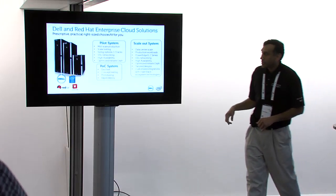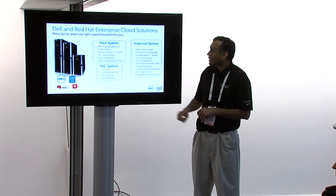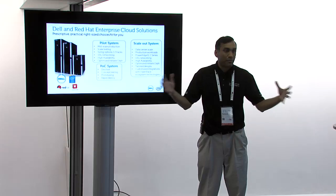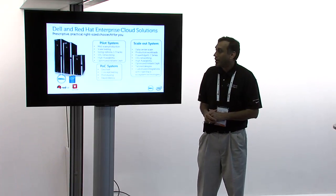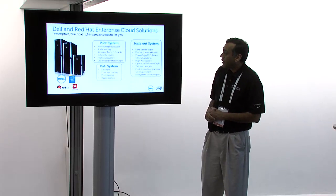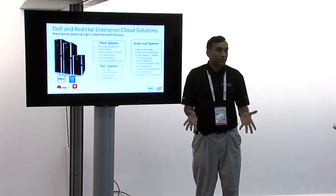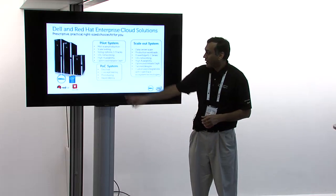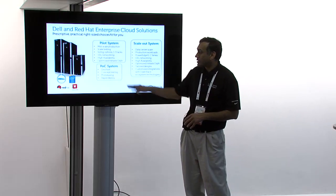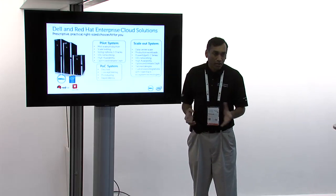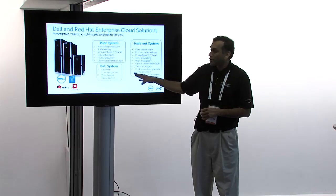We have three systems today as an easy way to get started: a proof of concept system, a pilot system, and a scale-out system — three different pre-packaged bundles you can buy. If you're just starting off with OpenStack and want to kick the tires, the POC is the best way to get started. It's very simple, low-cost, and quick to get going — great for concept testing, prototyping, and deploying some workloads.